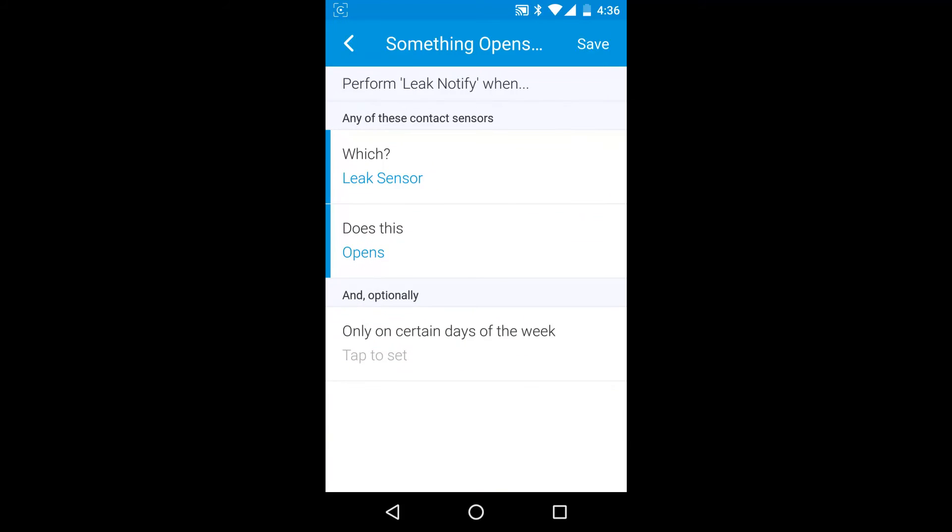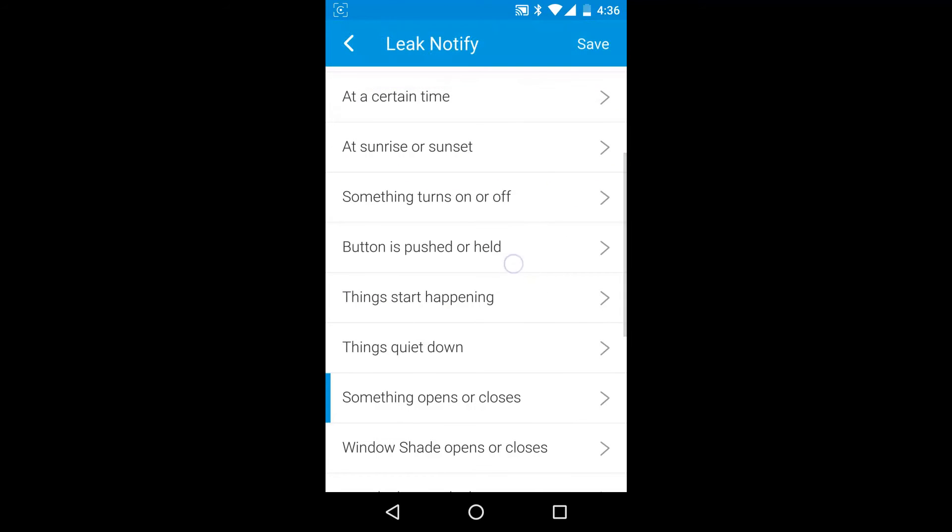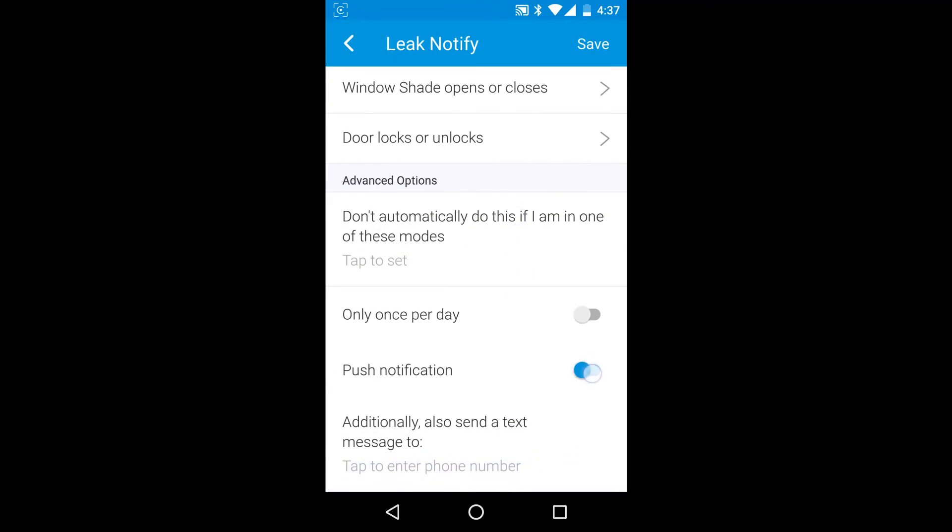Tap which and then select the leak sensor and tap Done. Tap Save in the top right corner. Scroll down to find the Push Notification setting and slide to On. Tap Save in the top right again.